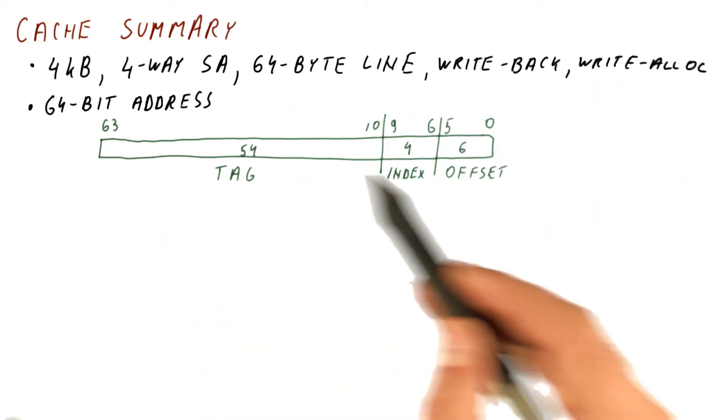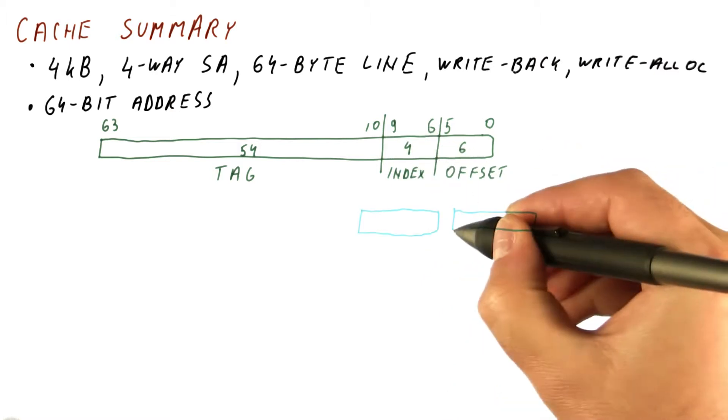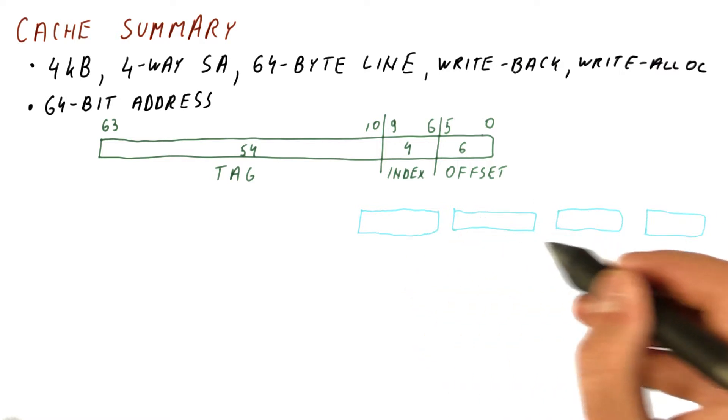Now let's see how for this same cache, we use this address to access the cache. To make things easier to represent, we will draw the lines in the same set horizontally.